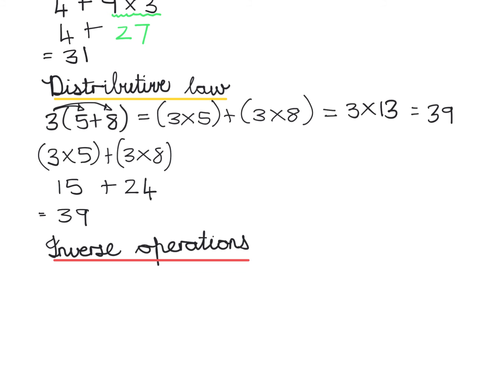I'm going to use three numbers and I want you to choose three different colors. I'm making the number 220 in red, 190 in blue, and 30 in green. If I start with 190 plus 30, I get 220. Same numbers, different order.